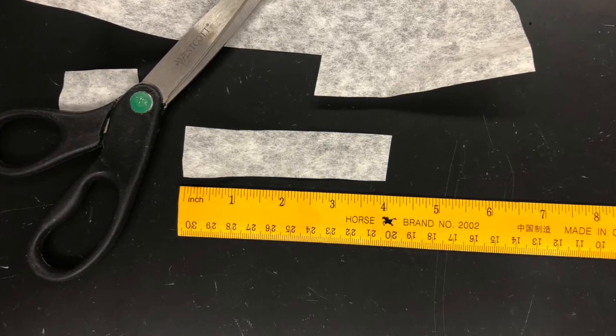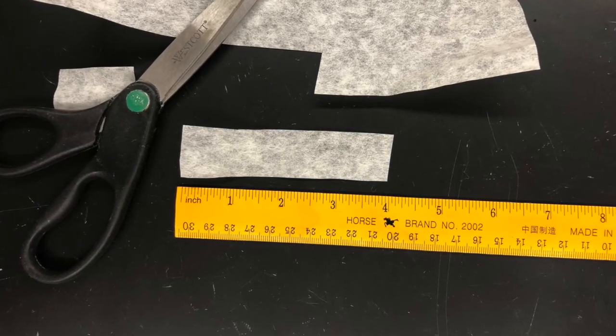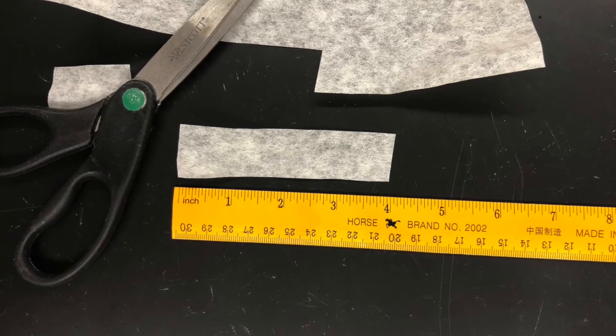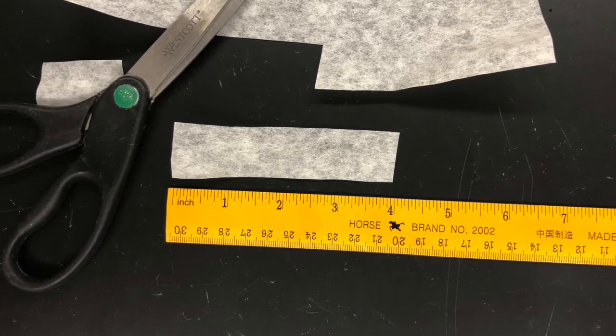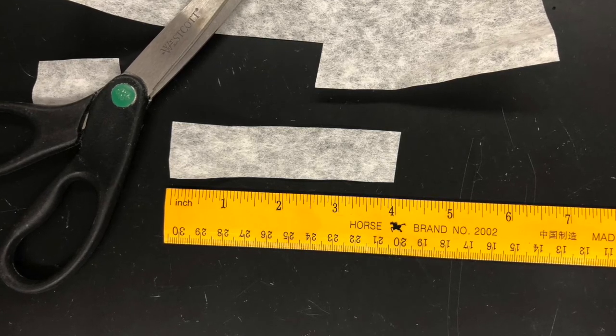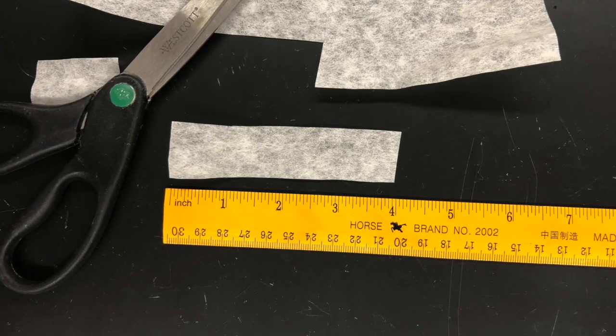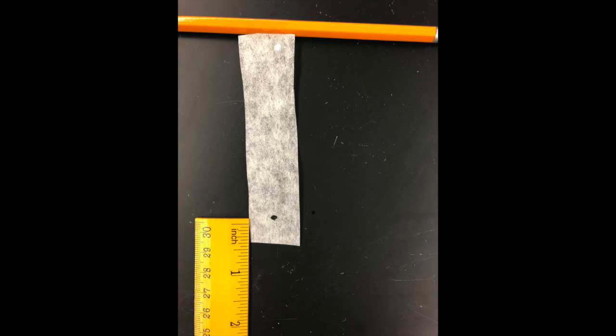Today we're going to work on the chromatography lab that you're going to do at home. The first thing you need to do is cut three strips of paper from your coffee filter. Each one should be one inch wide and four inches long.